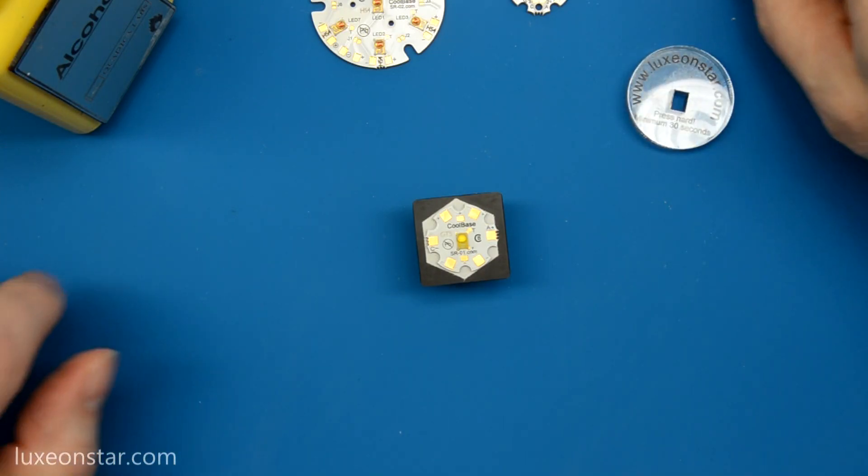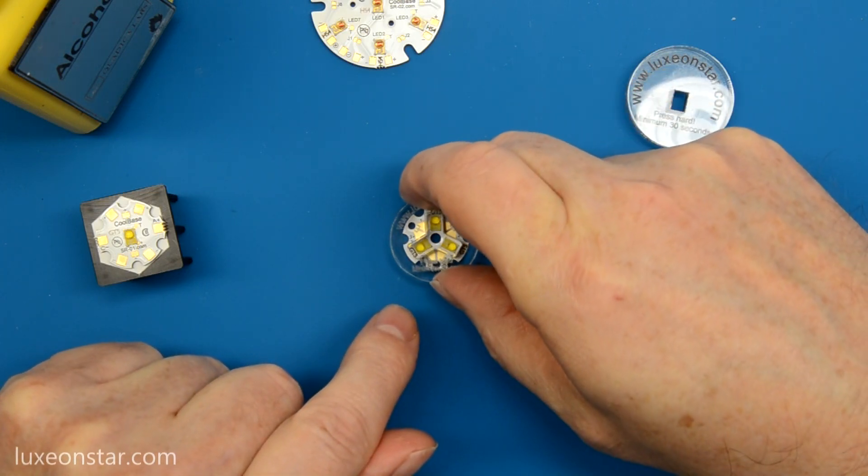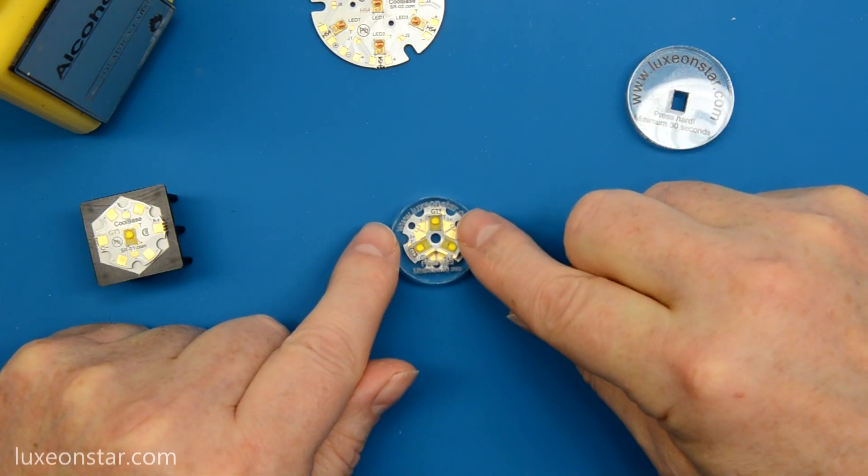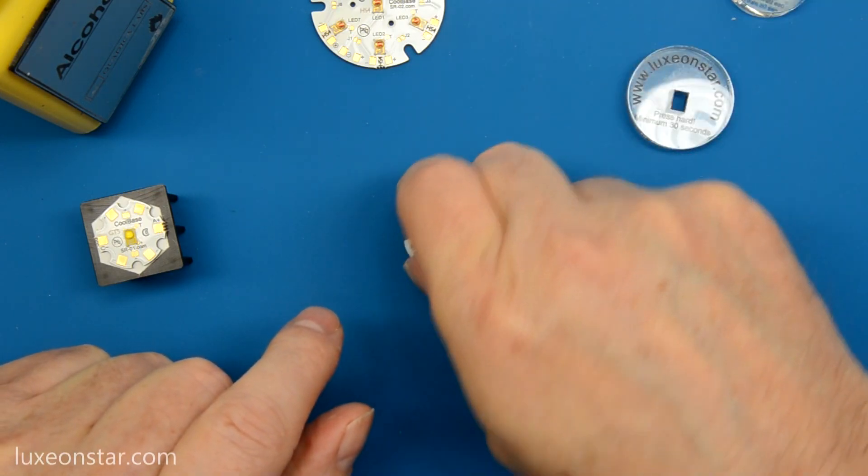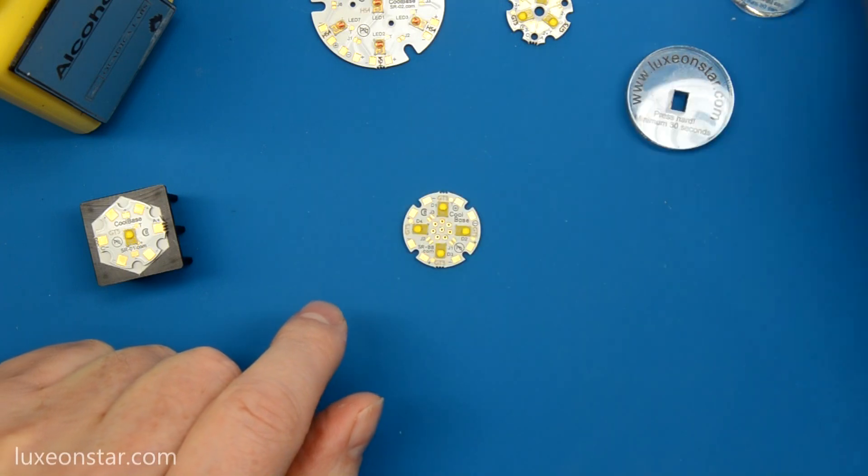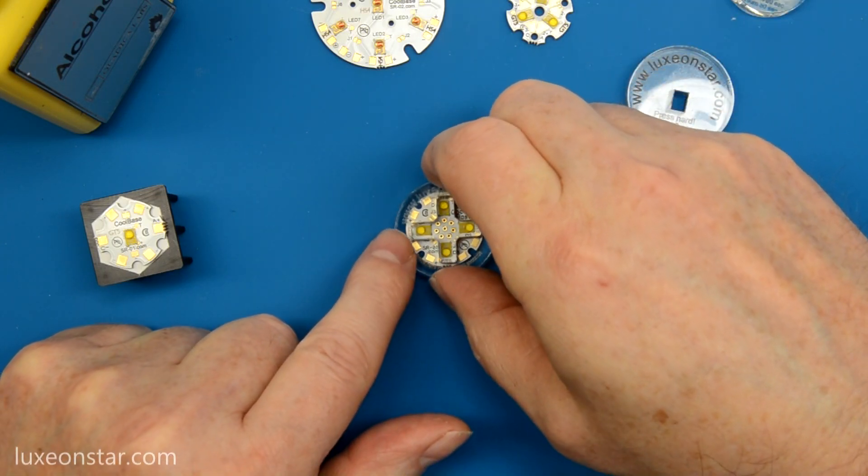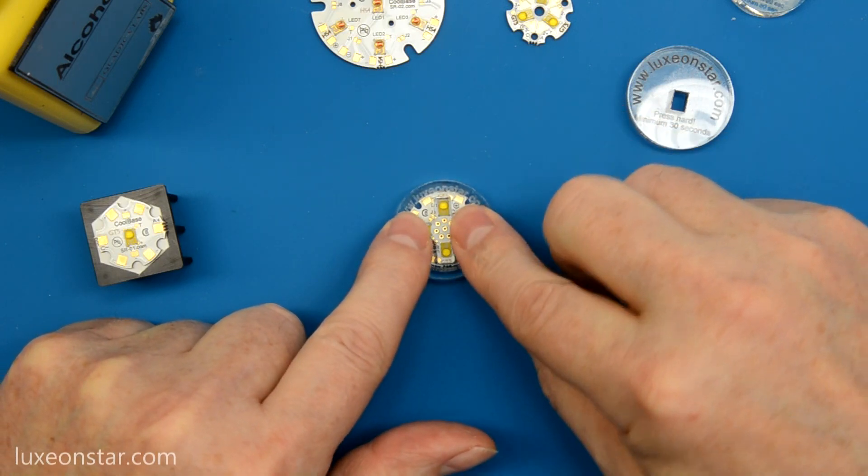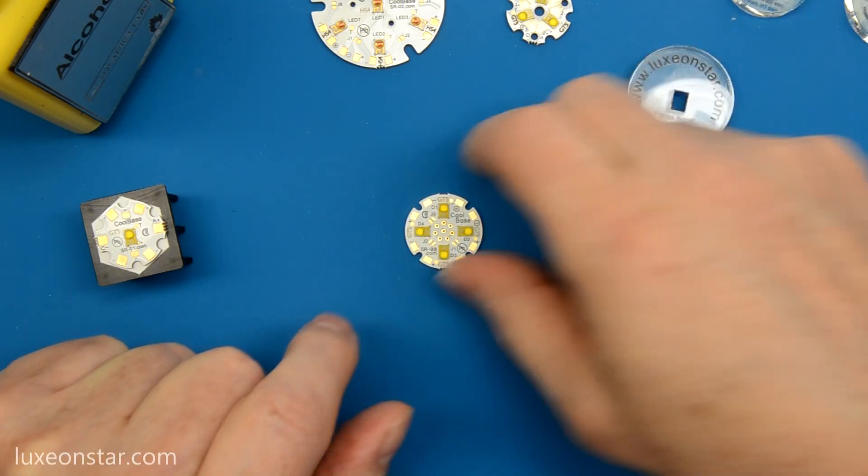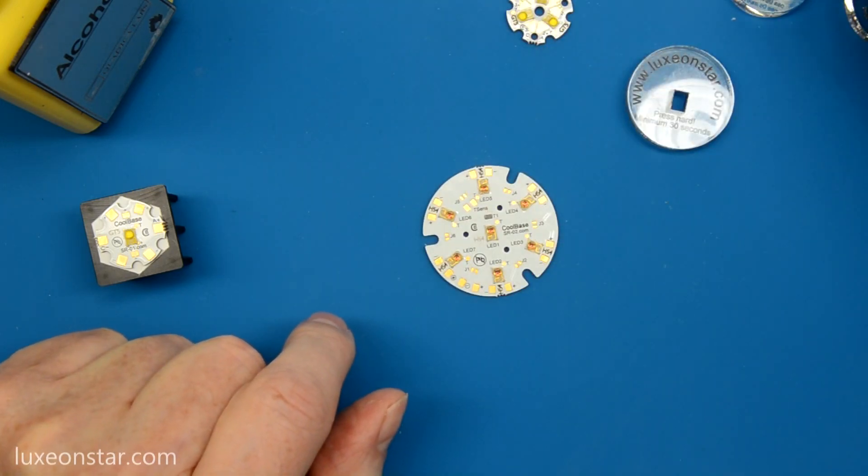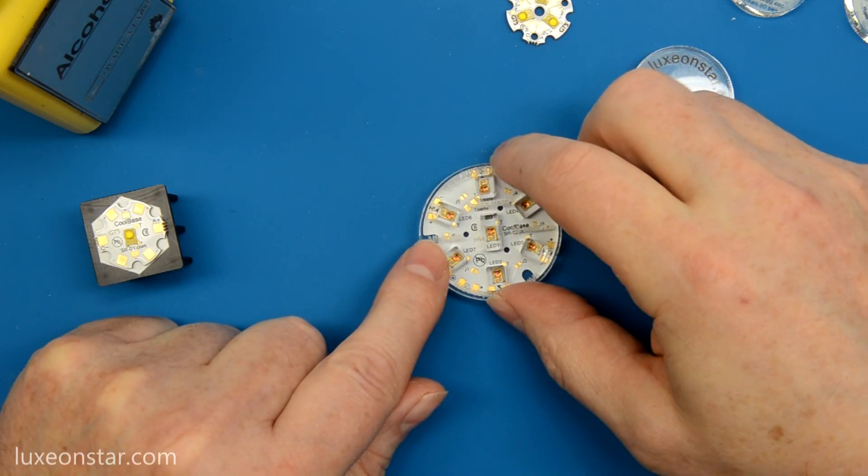This one here will work with our tri-star LED assembly. You can see there are openings for the LEDs to accommodate the LEDs on the press. And we have one for our quad LED assembly. Again, there are openings for the LEDs to fit in, so you can push down without touching or hurting the LEDs. And then of course we have a press also for our 7 LED 40mm round assemblies.